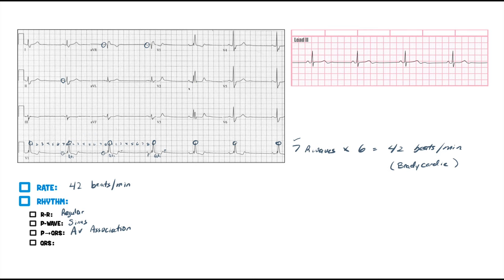That's a little bit more than three boxes. This is actually greater than 0.12 seconds — so what does that mean? That's a wide QRS. Now, whenever you see this configuration, we call it an RSR configuration.